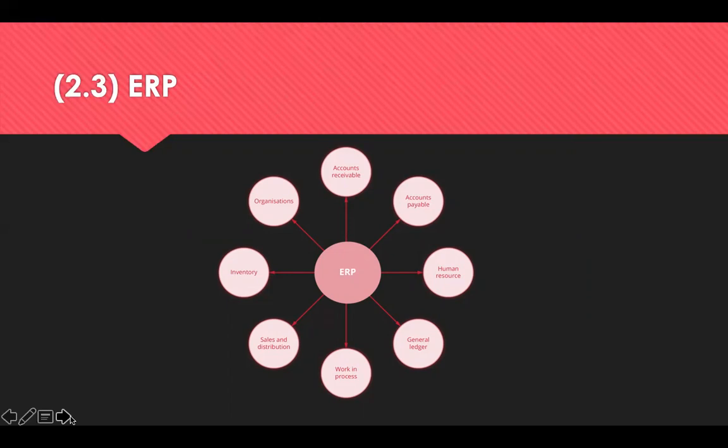ERP also covers manufacturing — tracking and reporting all orders through the end-to-end production process, plus all MRP and MRP 2 outputs. It can handle project management including planning, resource planning, project costing, time and expense, performance units, and activity management. Finally, engineering — all drawings, change requests, and material specifications are stored in one database, allowing access for all.